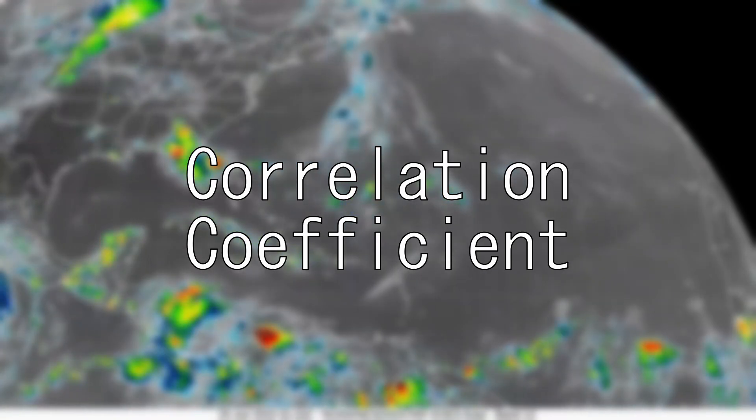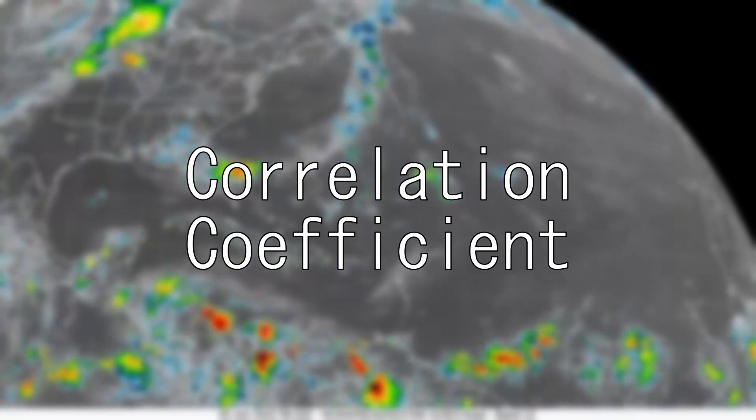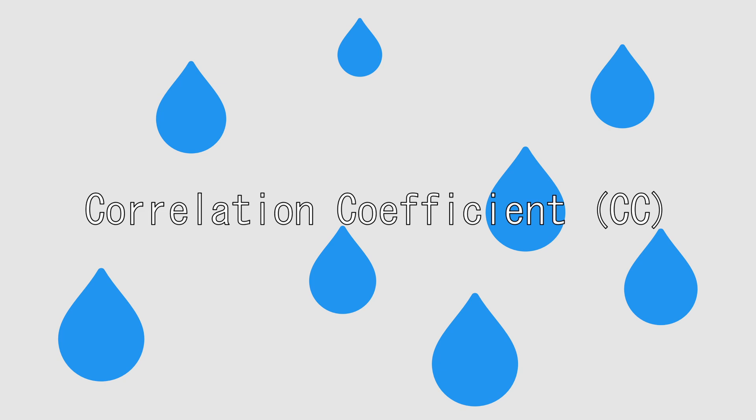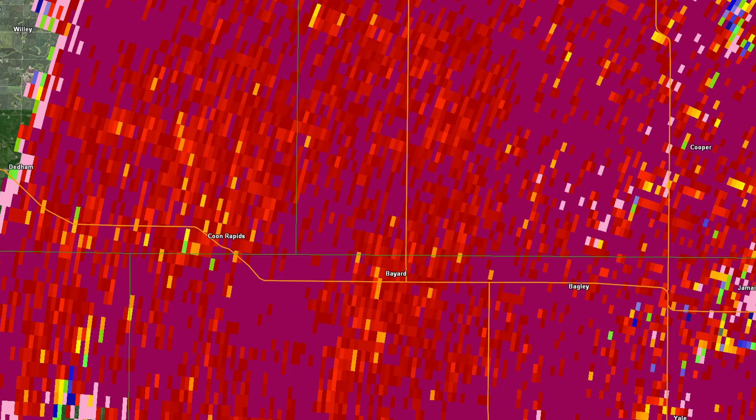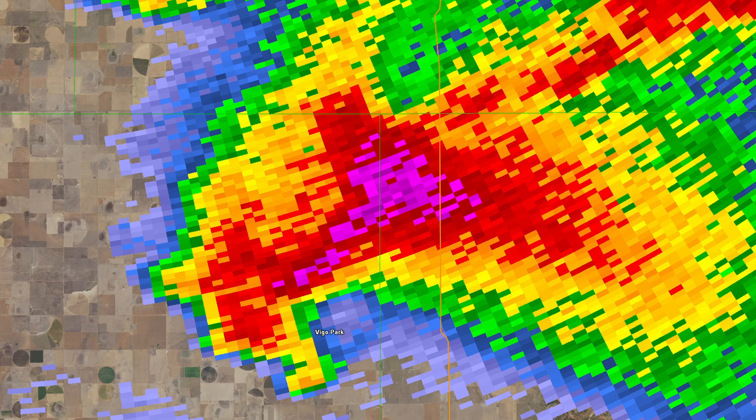Correlation Coefficient. In a normal storm, the falling raindrops are usually pretty similar in size and would have a high correlation coefficient, or CC. This shows up as red and pink on radar. If hail in a storm is big enough, it might cause the CC to drop a little, since the size of the rain and hail varies more.